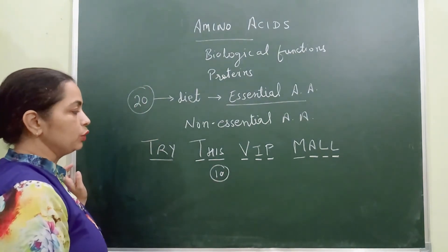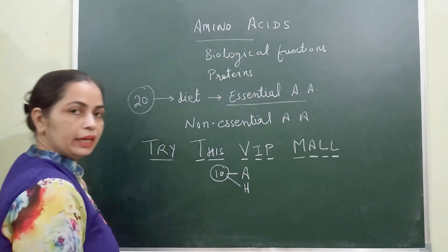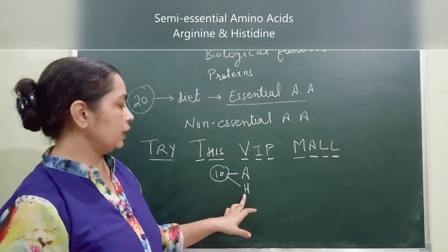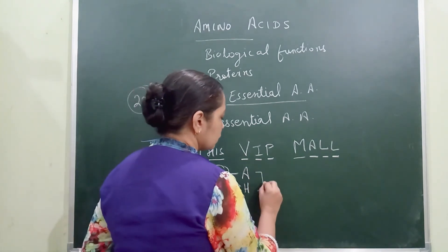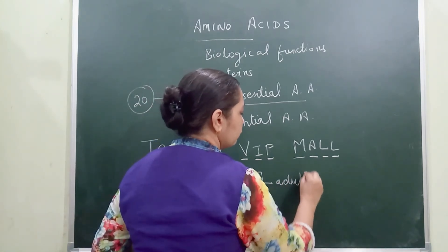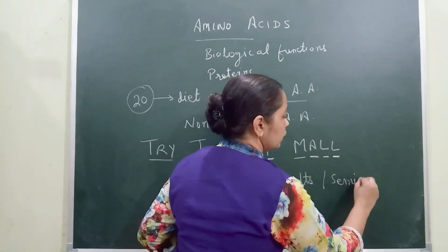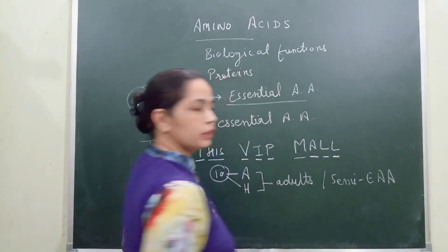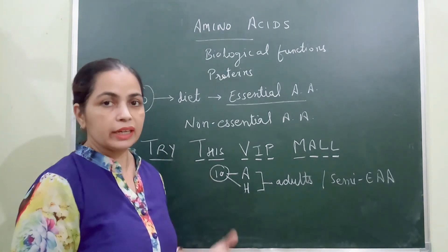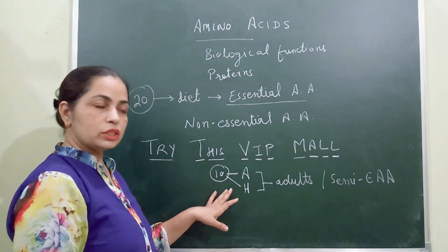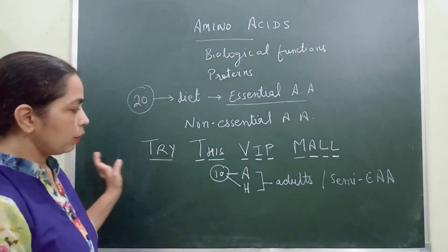In total there are 10 essential amino acids. Among these 10, two — arginine and histidine — are not synthesized in children and can only be synthesized by adults. That's why these two are also termed semi-essential amino acids. The remaining eight are strictly essential, and these two are essential for kids as well, so all 10 are considered essential amino acids.